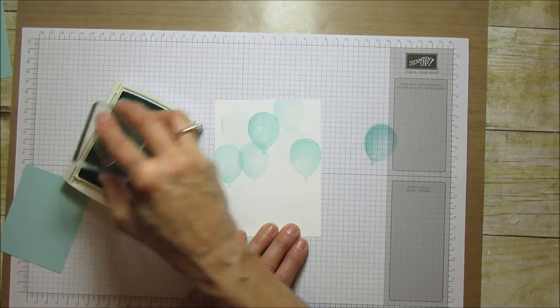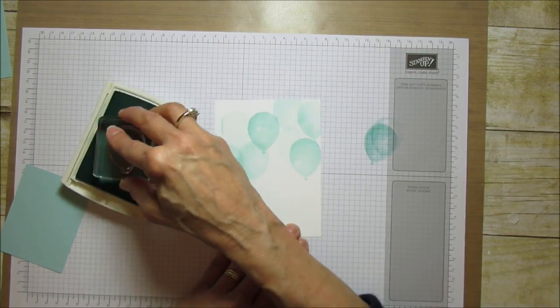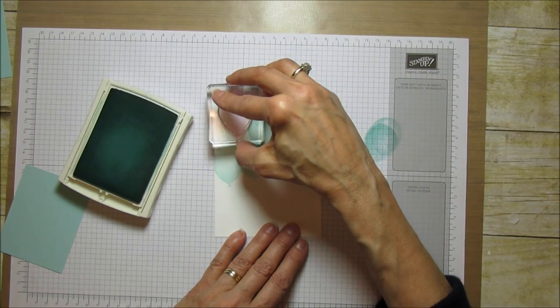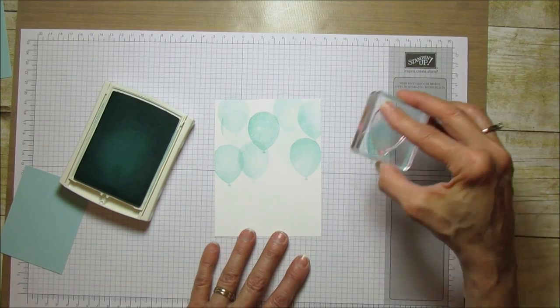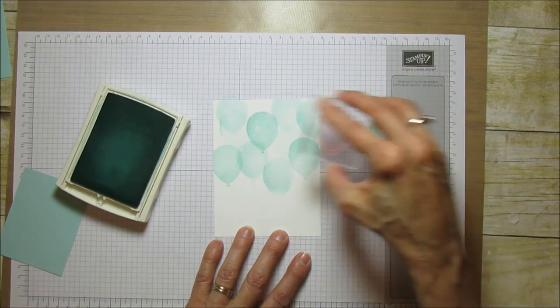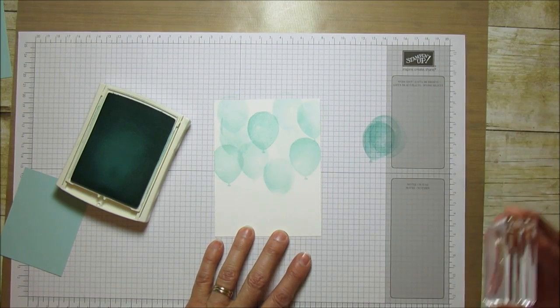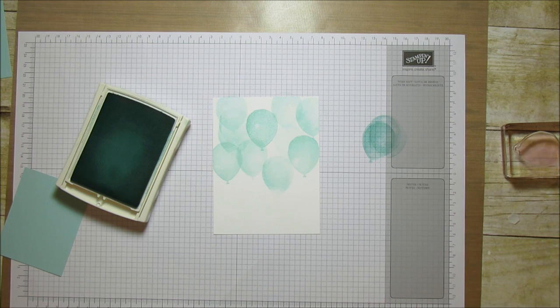I'm just overlapping them all because it looks super cute to overlap them like they're all floating in the air. Make that one a little bit darker. So I think that's it. This doesn't have to be perfect - it just looks really cute that they're all stamped overlapping.